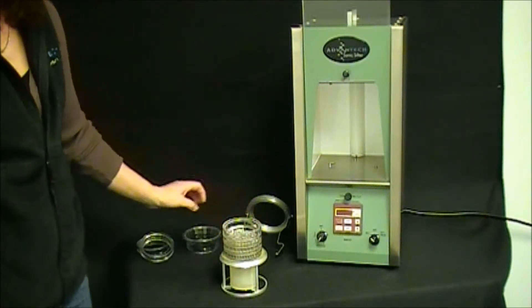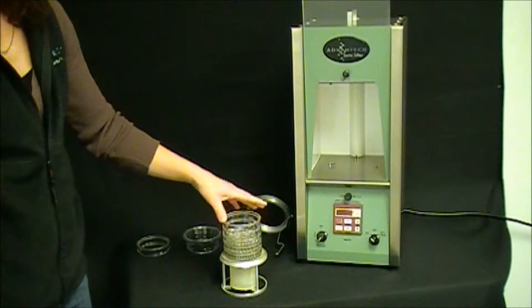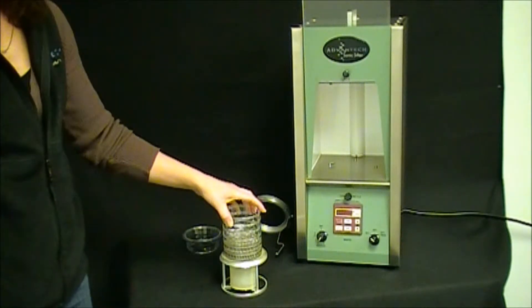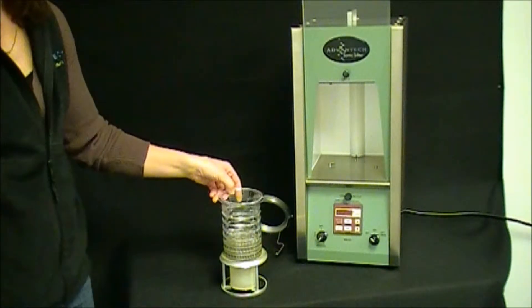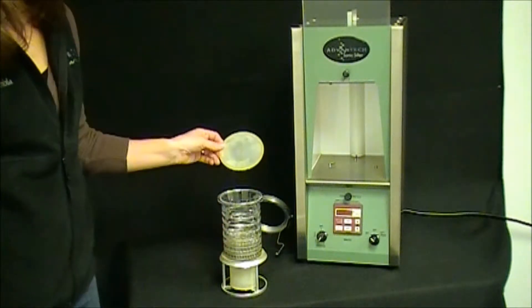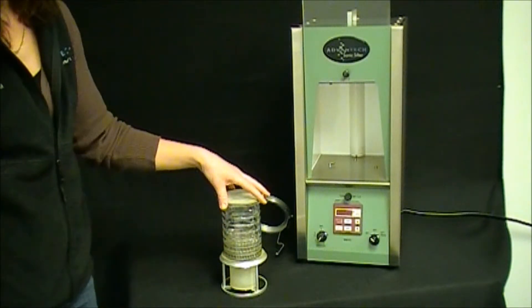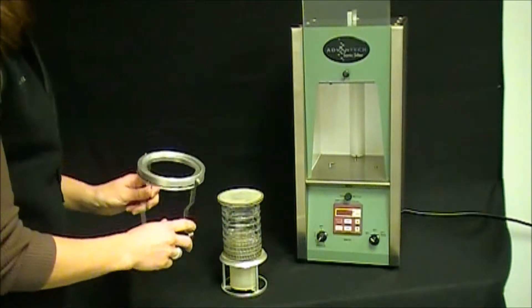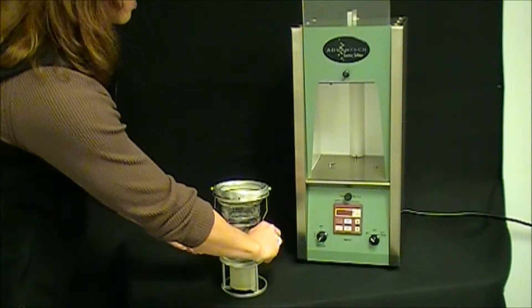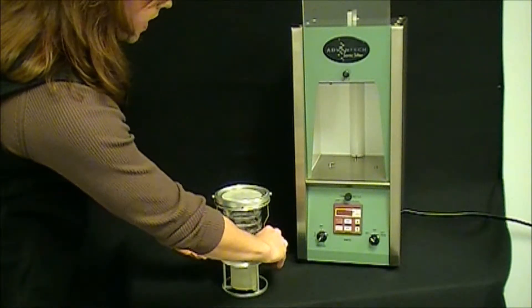If necessary round the stack out with sieve spacers and add your top cone. Top with the diaphragm and lock the entire assembly together with the column lock.